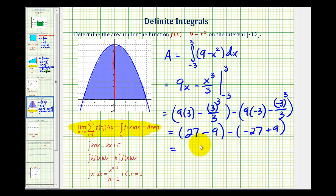So we'll have eighteen minus negative eighteen, which is equal to thirty-six. So the area of the shaded region is thirty-six square units.